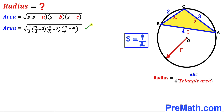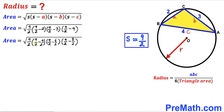Now we are going to rewrite the whole numbers with denominator 2: 2 becomes 4/2, 3 becomes 6/2, and 4 becomes 8/2. This gives us all terms with denominator 2 across the board. So 9/2 minus 4/2 gives 5/2, 9/2 minus 6/2 gives 3/2, and 9/2 minus 8/2 gives 1/2.